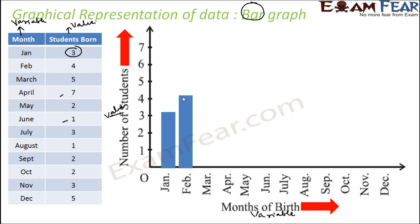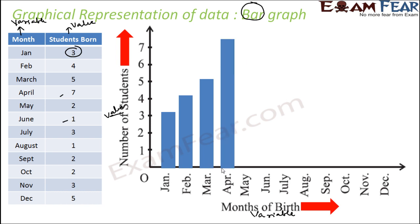For March, five students were born — bar of height five. April, seven students — bar of height seven. May, two students — bar of height two. June, one student — bar of height one. July, three students — bar of height three. August, one student — bar of height one.